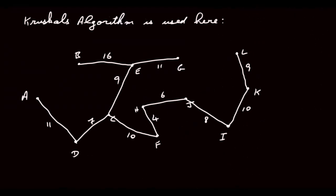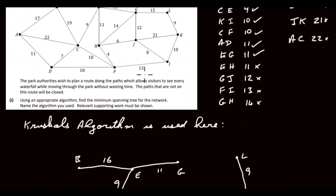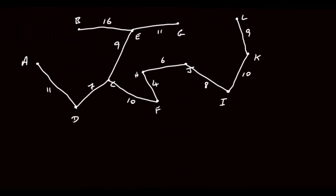That's our minimum spanning tree. We've named the algorithm — Kruskal's algorithm. We found the minimum spanning tree for the network, named the algorithm, and shown relevant supporting work. Just as a matter of interest — though we weren't asked — if you add up all those weights: 11 + 7 + 9 + 16 + 11 + 10 + 6 and so on, you get a minimum weight of 101 minutes.